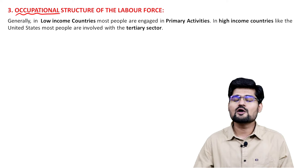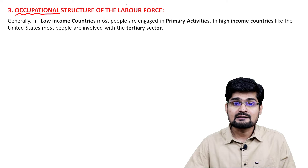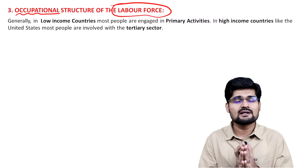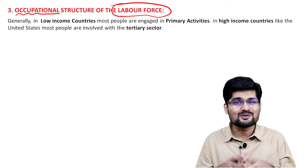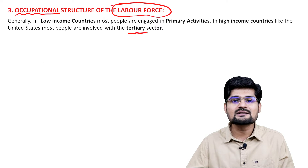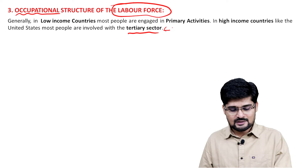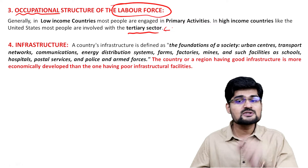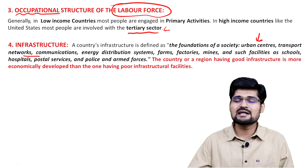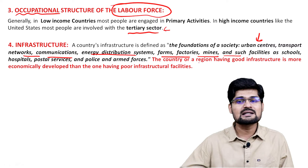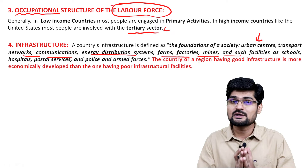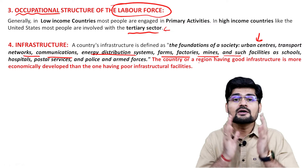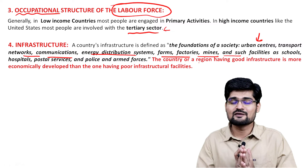The third important indicator is occupational structure, related to the labor force. A country whose labor force is more engaged in primary activity will not be a high-income country — higher-income countries are mostly involved in tertiary, secondary, and quaternary sectors. Infrastructure is another key economic indicator: urban centers, transport networks, communications, energy distribution systems, farms, factories, and mines are essential parts of a country's infrastructural development.